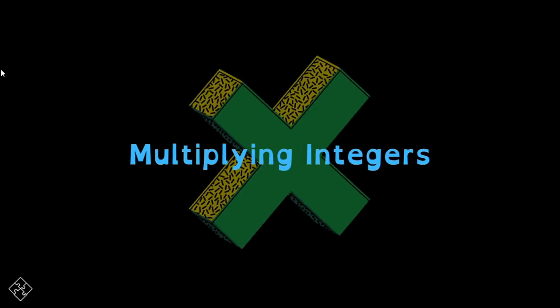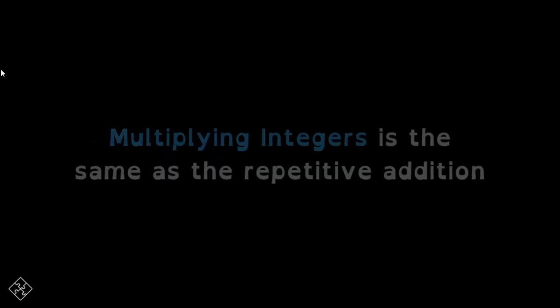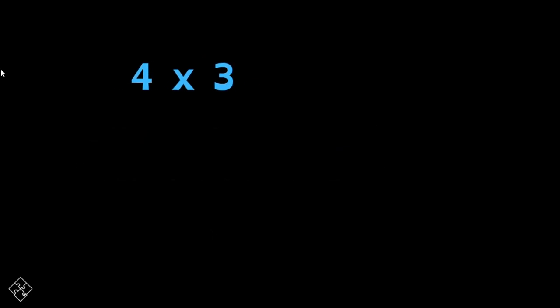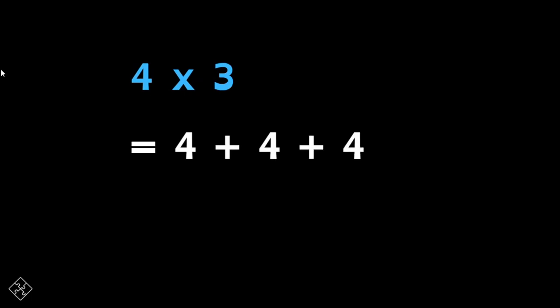The multiplication of integers is one of the basic operations performed on integers. Multiplication of integers is the same as repetitive addition, which means adding an integer a specific number of times. For example, 4 times 3 means adding 4 three times: 4 plus 4 plus 4 is equal to 12. Let us learn more about the multiplication of integers in this video.